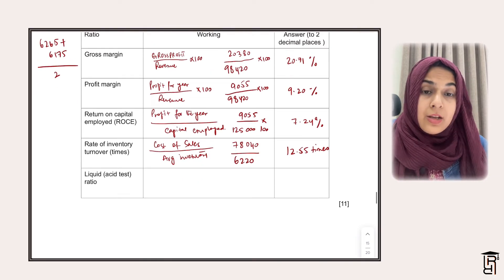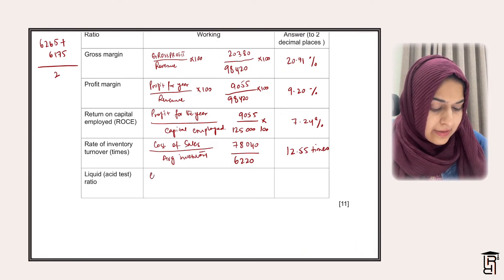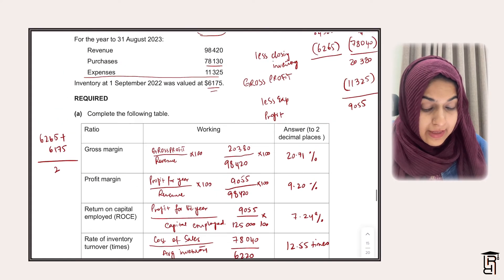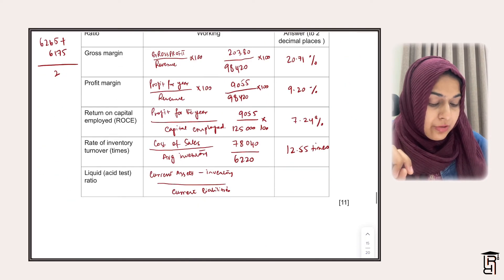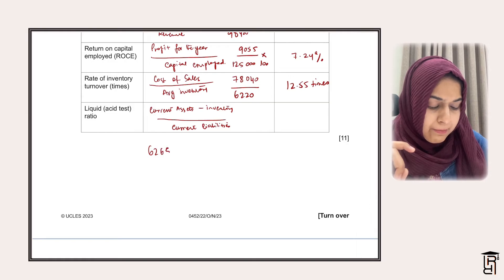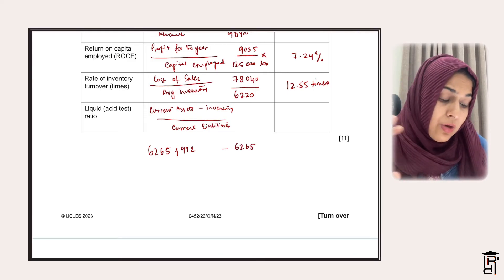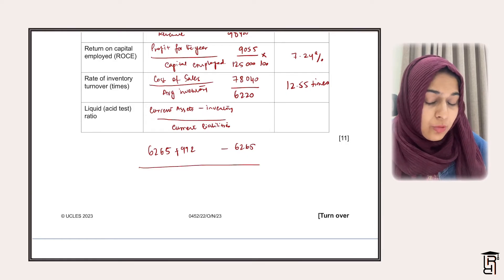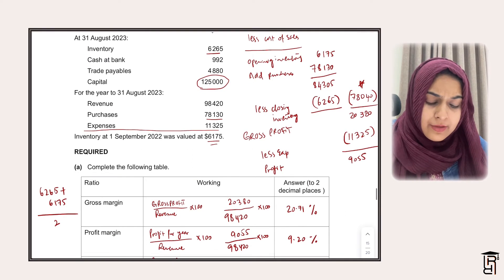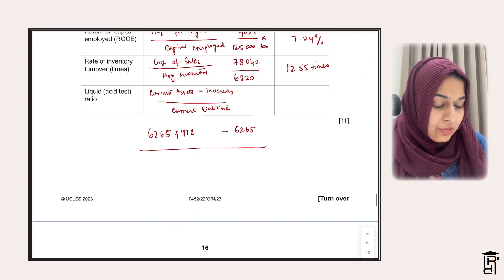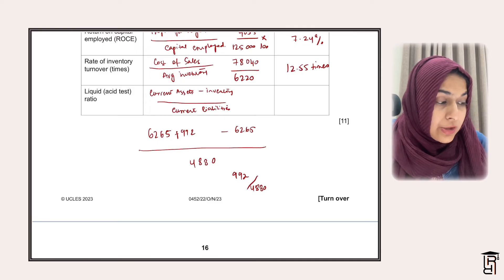Next, they ask for the liquid asset test ratio. The formula is current assets minus inventory divided by current liabilities. Current assets are inventory 6,265 plus cash at bank 992. Subtracting inventory 6,265 leaves just 992 in the numerator. Current liabilities are only trade payables of 4,880. So 992 divided by 4,880 = 0.2:1.